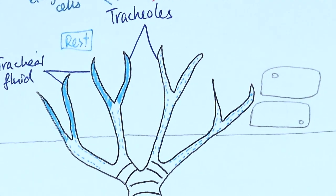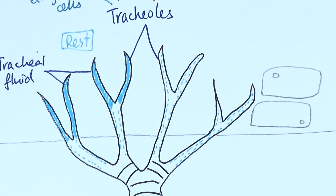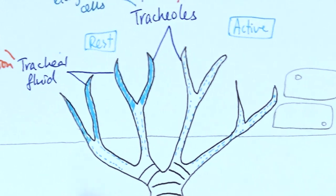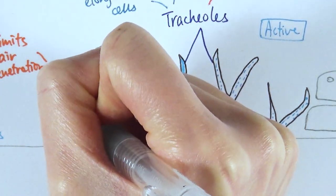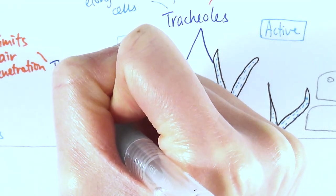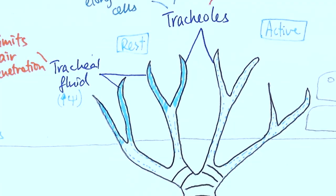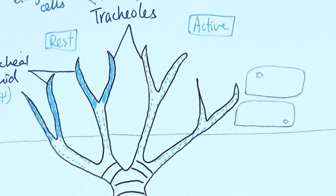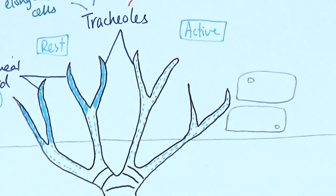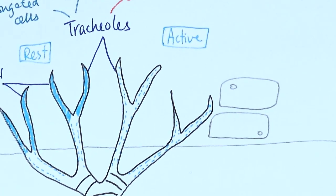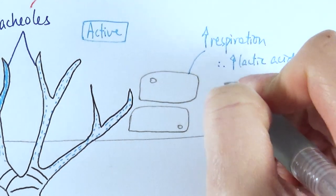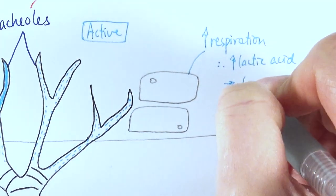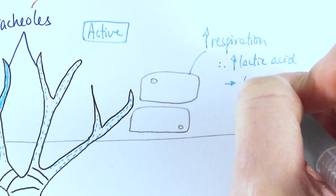However, when it is exercising, when it is active, then it becomes a bit like this. The idea is because of the tracheal fluid is there, it's got very high water potential in these tracheoles. Whereas when it's active, then these cells would be doing respiration and they actually do almost like anaerobic respiration because they don't have enough oxygen, so they will start producing lactic acid. And if they have more lactic acid in the cells, that would in turn decrease their water potential.